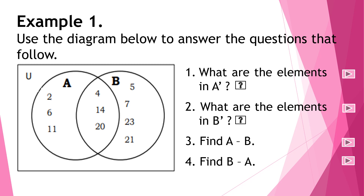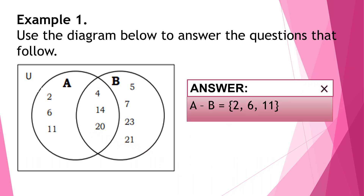Next, question number 3: find A minus B. When we say A minus B, those are the elements in A that are not in B. Looking at this Venn diagram, the elements that are in A but not in B are: A minus B is equal to 2, 6, and 11.